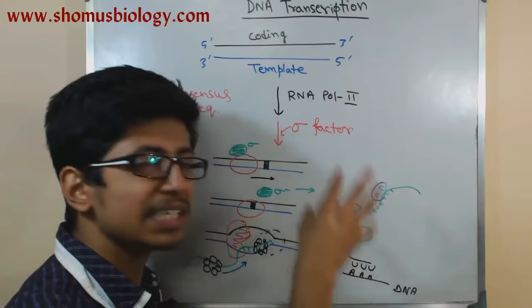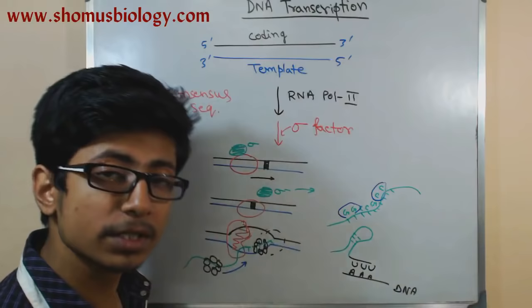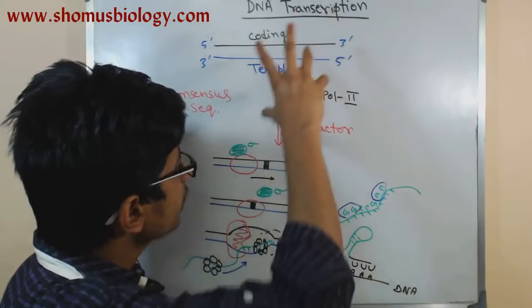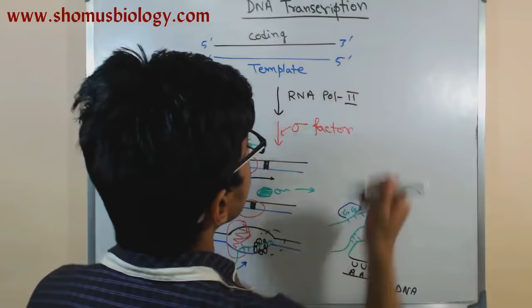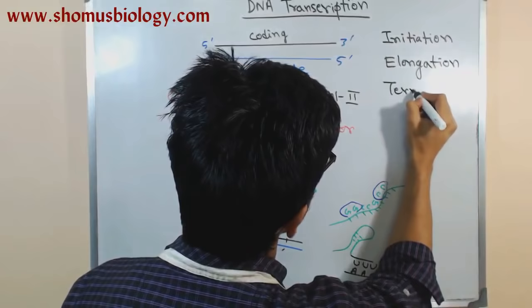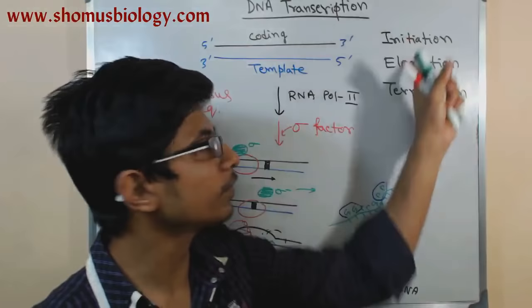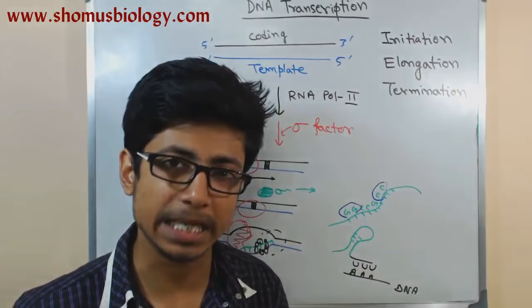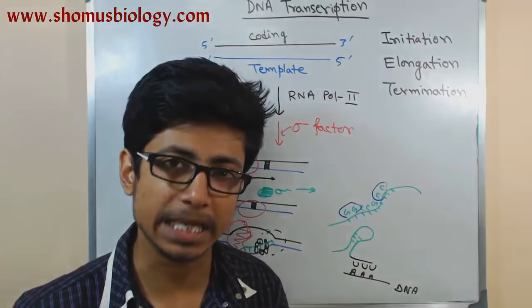This is called intrinsic termination because the signal — the GC-rich sequence — is encoded within the RNA itself. So in summary, this is the overview of DNA transcription, broken into three stages: initiation, elongation, and termination. From the next videos onward, we will discuss each of these stages in detail. If you want to study in detail, please stay tuned and watch the rest of the videos. Thank you.